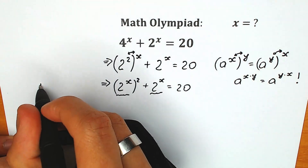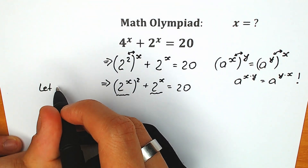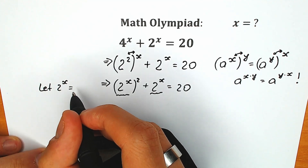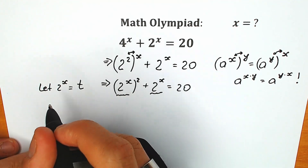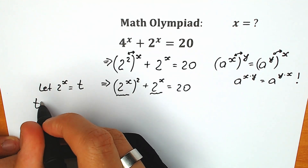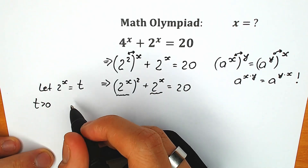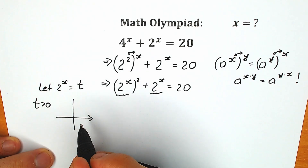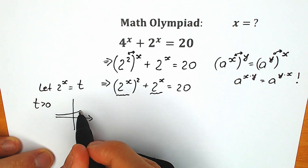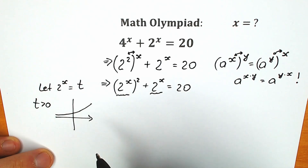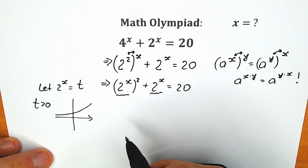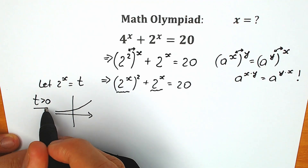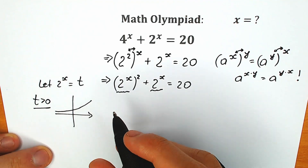On the left side, let 2 to the power x equal t. One really important moment: t needs to be positive, because this is our exponential function. 2 to the power x is our exponential function, and every time this function is positive. So this is a key tip for this substitution.